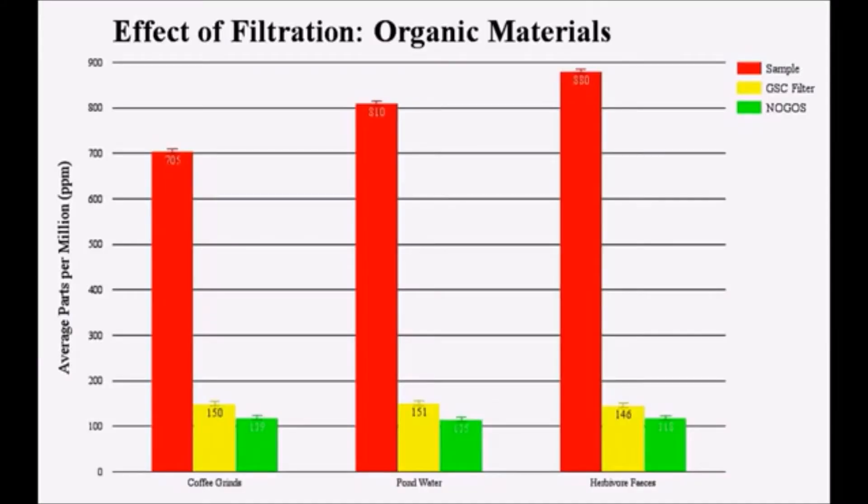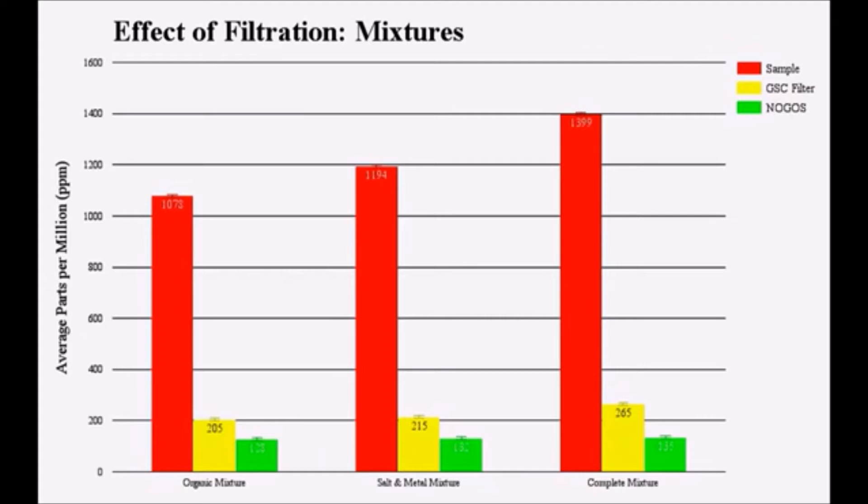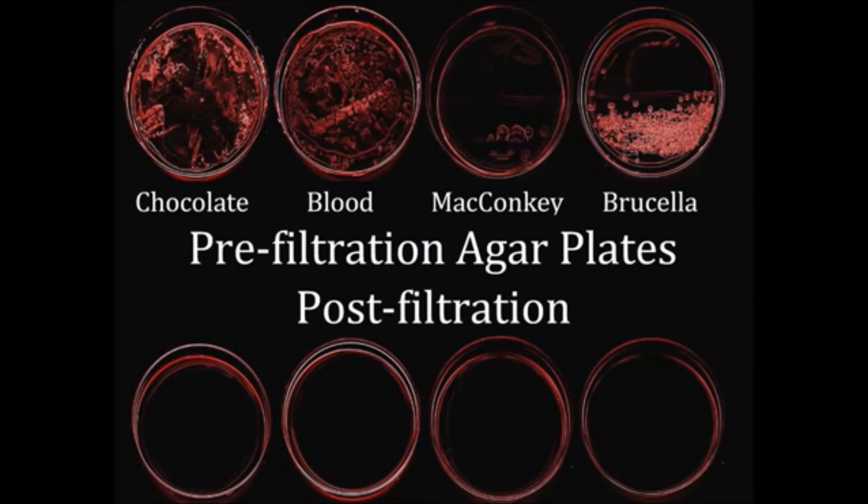NOGOS's average filtrate of 117 ppm is comparable to the 115 ppm measurement of tap water. The NOGOS was also effective on salt, glucose, and iron oxide. The NOGOS effectively removed mixtures from water, especially compared to the ineffective GFC filter, and bacteria were also completely eliminated from the water.